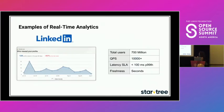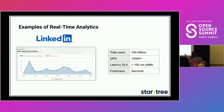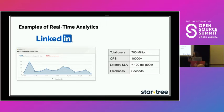Here's an example of real-time analytics. Apache Pinot was originally built at LinkedIn, making this a great example. For 'who viewed my profile,' you give end users the ability to see who viewed their profile and slice and dice the data by location, companies, and more. There's a lot of dimensionality and complexity involved.